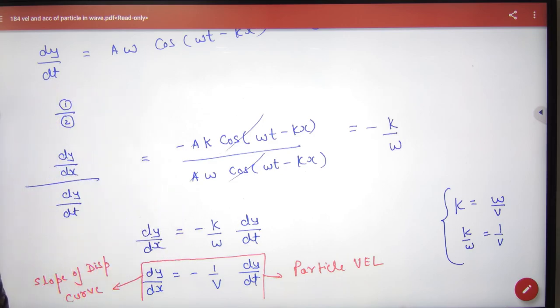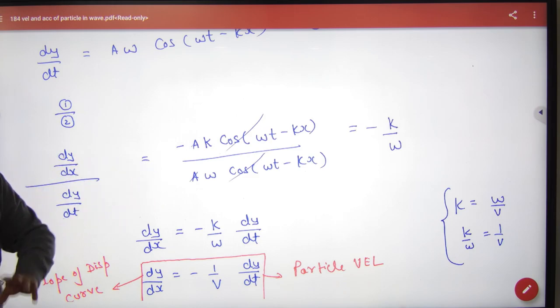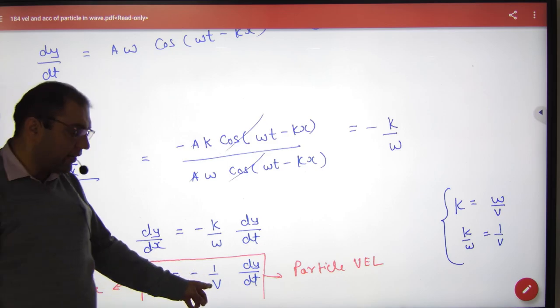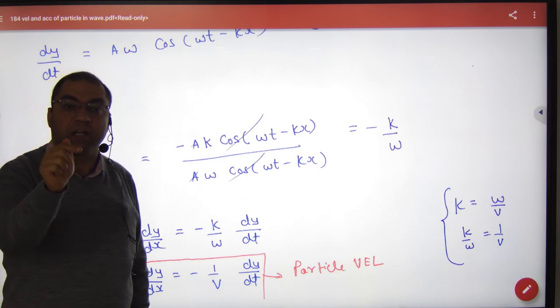Now the objective question, how will it come? You will give a wave snapshot, you will give a point of the particle. You will remove the slope, you will put the slope, you will give a wave velocity, I will put it.